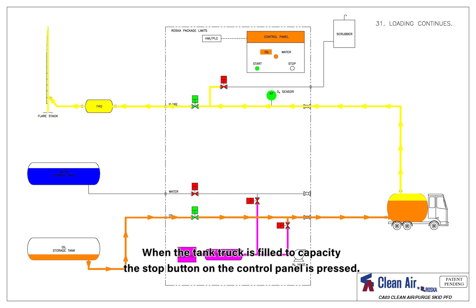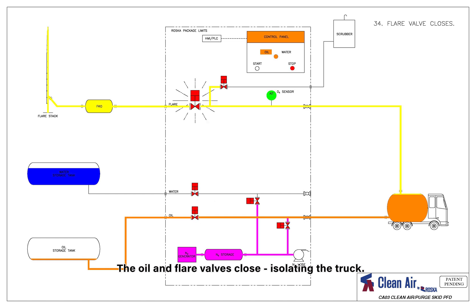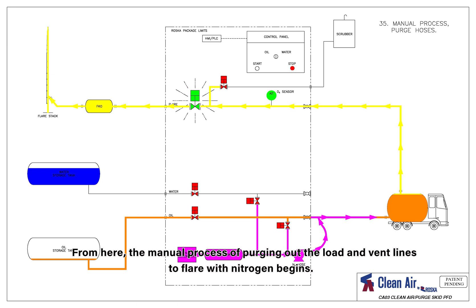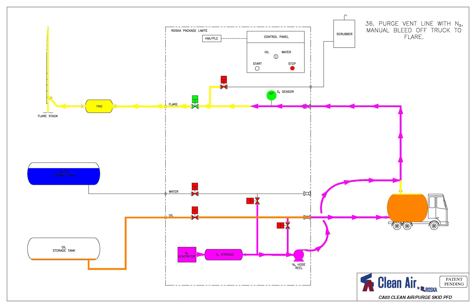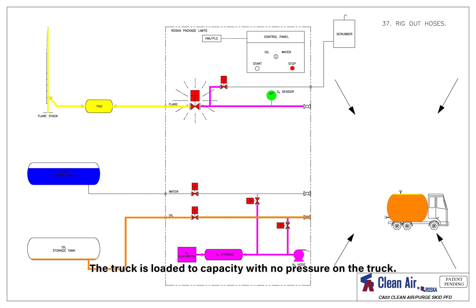When the tank truck is filled to capacity, the stop button on the control panel is pressed. The oil and flare valves close, isolating the truck. From here, the manual process of purging out the load and vent lines to flare with nitrogen begins. After this, the flare valve is closed and the tank truck is rigged out. The truck is loaded to capacity with no pressure on the truck.